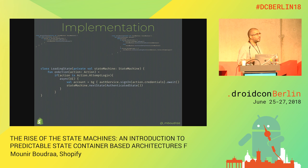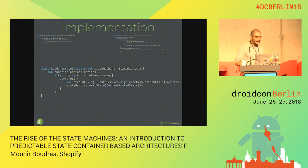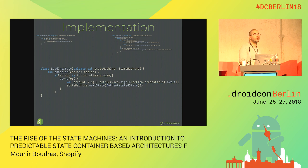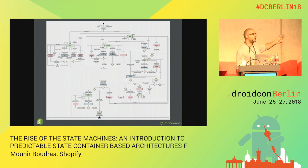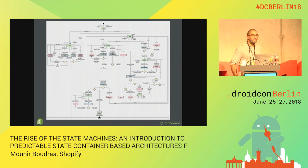On the other hand, a state contains the next destination, which means if we want to understand what is happening, we have to go through all the states to understand the global navigation. If we want to add something in the middle, or remove a state, or swap states, it becomes difficult - we have to go through everything again to be sure all the links are still working. Either you have a very good test suite to ensure that, or you pray.